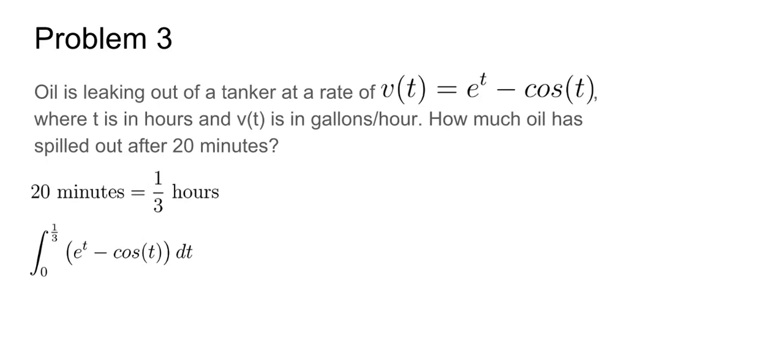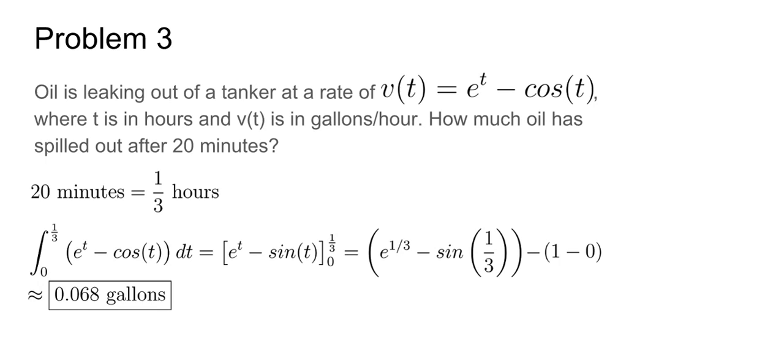Then we can evaluate it. I mean, first we have to solve for the antiderivative, and then we can evaluate it. So the antiderivative is e to the t minus sine of t, and we evaluate between 0 and 1/3. We solve and get the quantity e to the 1/3 minus sine of 1/3 minus the quantity of 1 minus 0. And then, since this is calculus, we can round off to three decimal places, so we just plug this into our calculator, and we get our final answer that roughly 0.068 gallons has come out of the oil tanker so far.